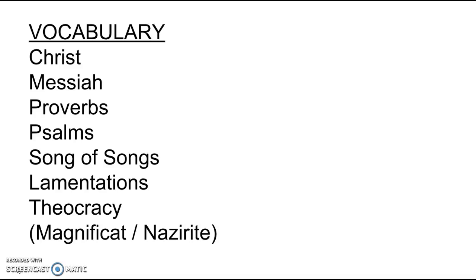Most of the early Christian writings were not written in Hebrew — they were actually written in Greek. The Greek word used to translate Messiah was Christos, or Ho Christos, the Christ. So Christ means anointed one; it is the Greek version of it. A lot of people think Christ was Jesus's last name.